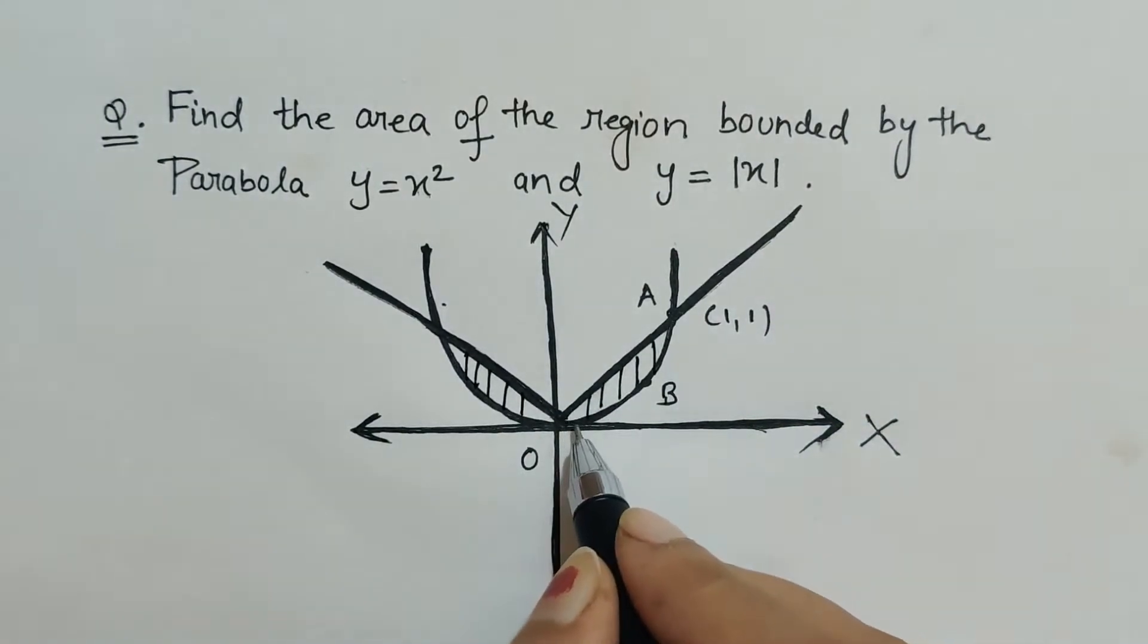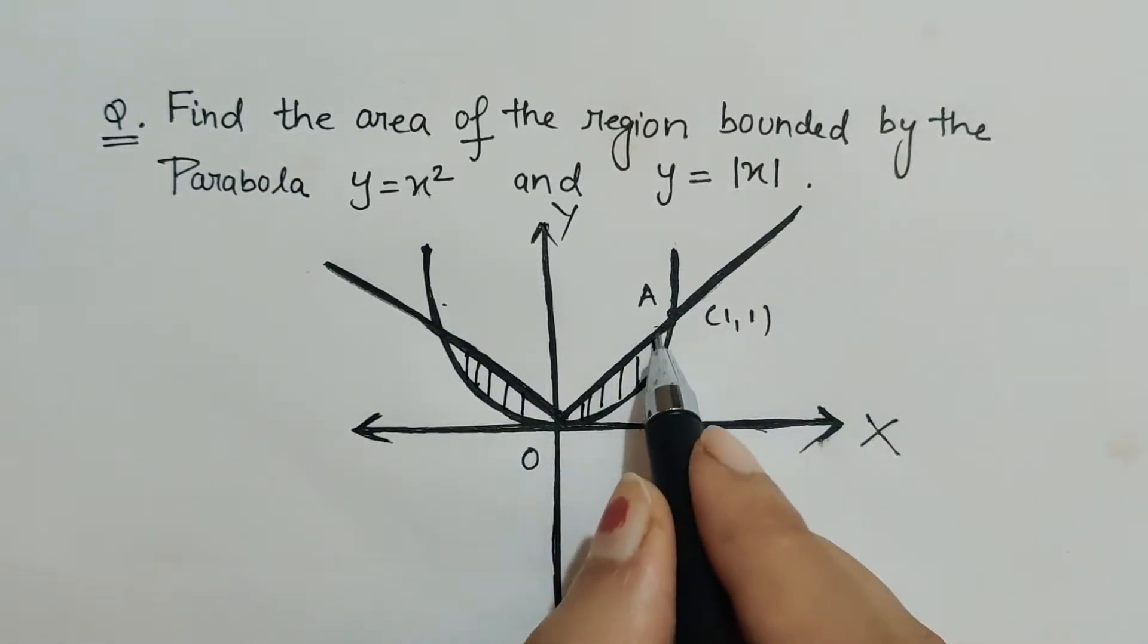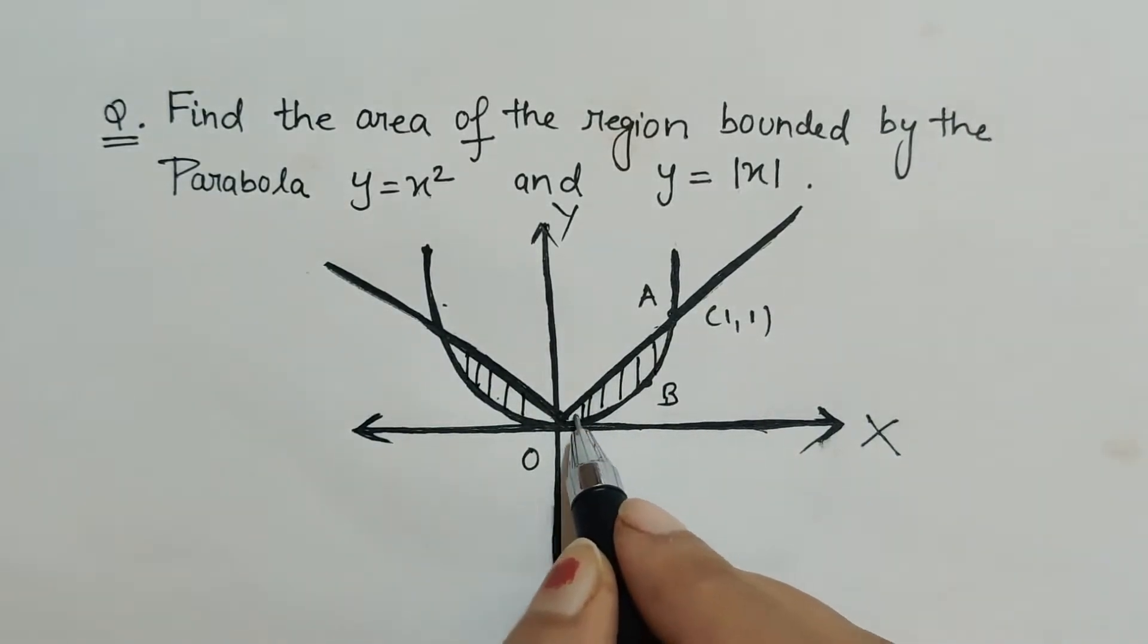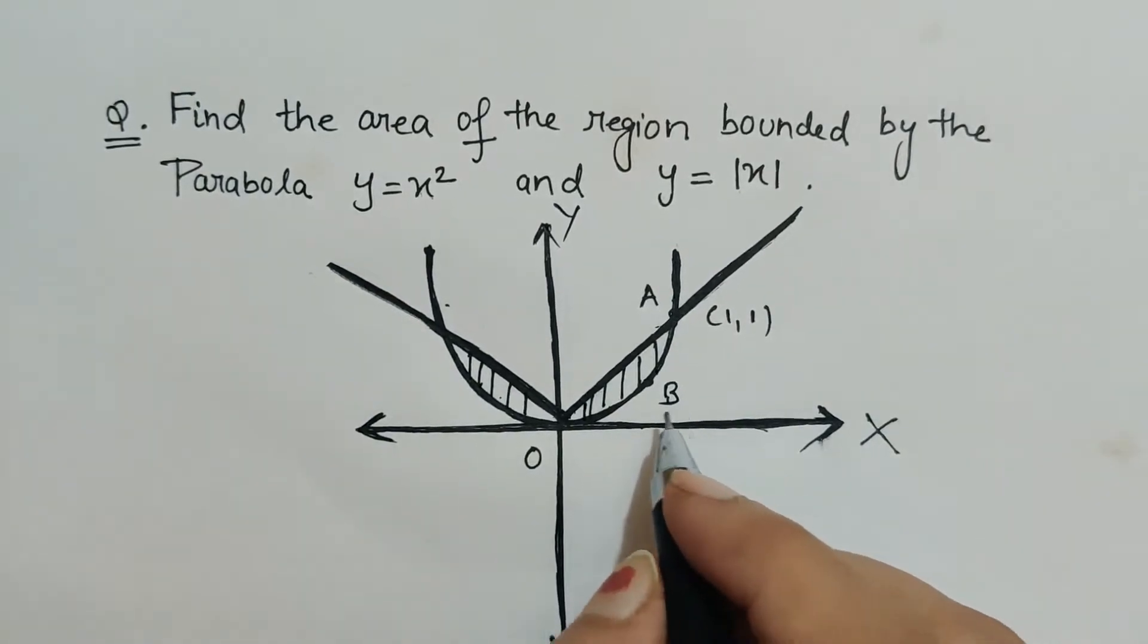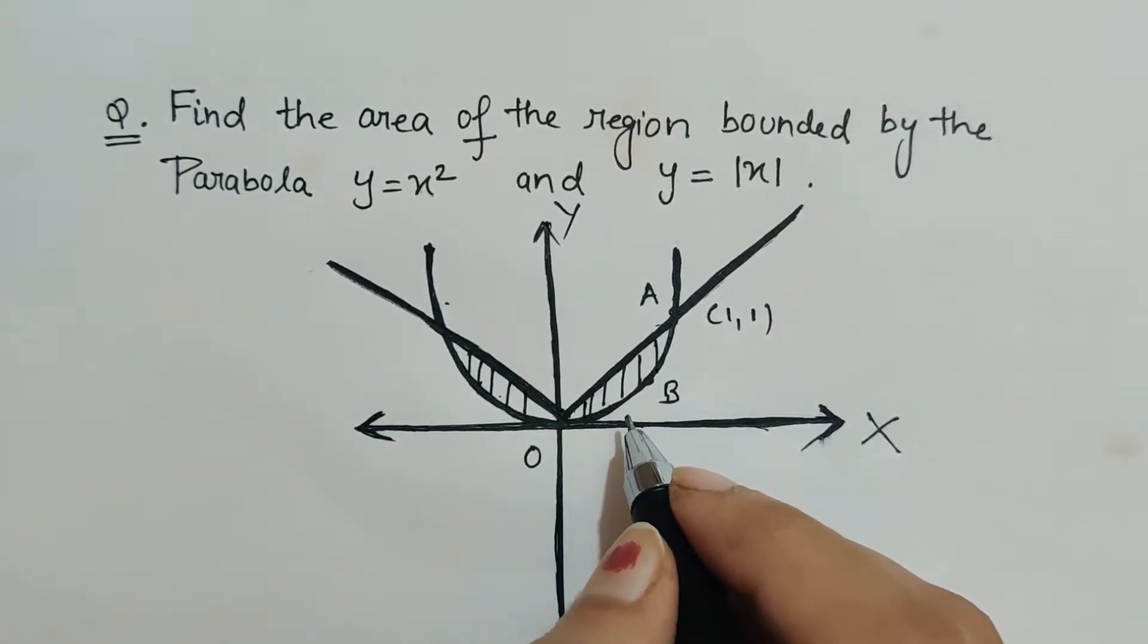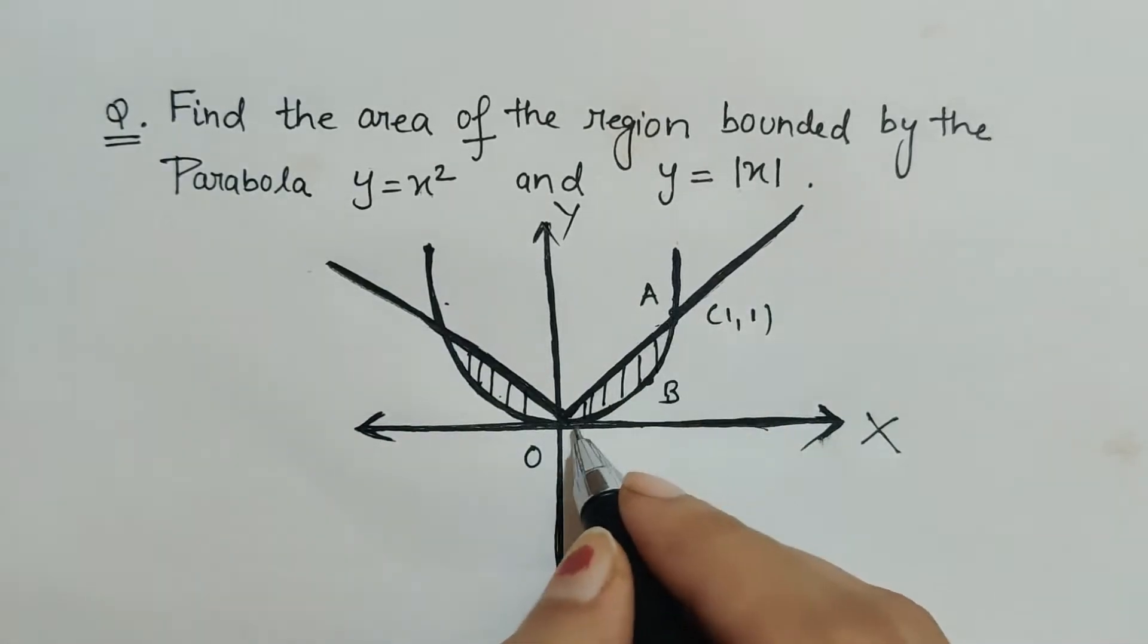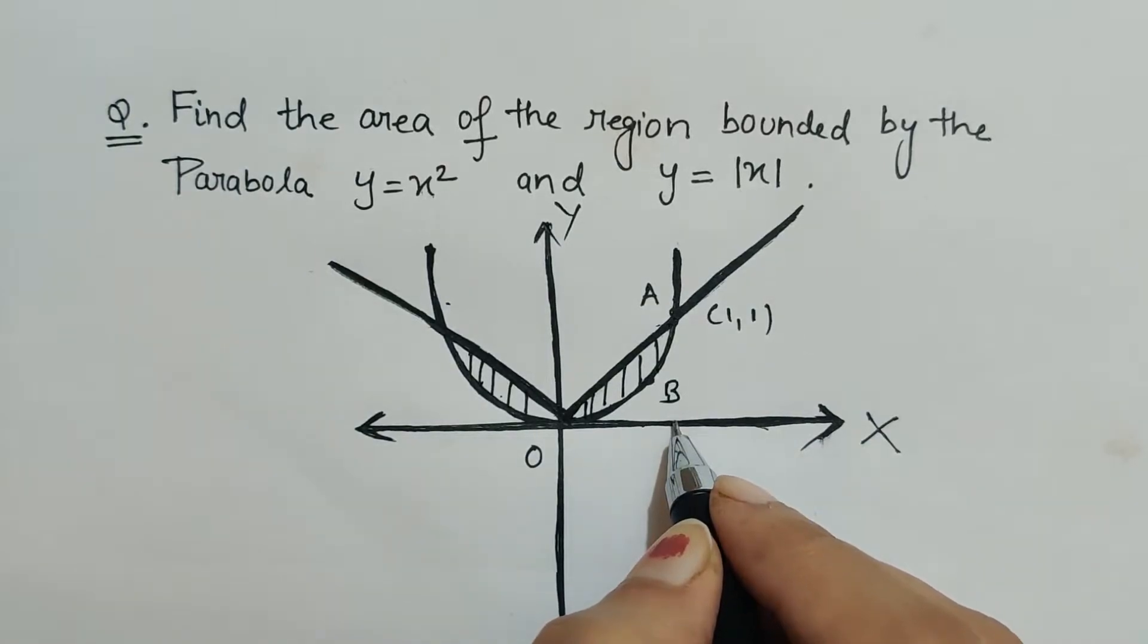So what we will do here is we will find the area of this alone and then we will multiply it by 2 because both the parts are symmetric in nature. So here we will be applying integration over this curve and this curve from 0 to 1. This will be the limit for us.